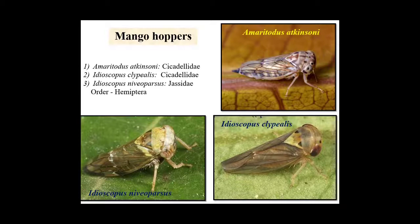The next major pest of mango is mango hoppers. There are three species: first is Amritodus atkinsoni belonging to family Cicadellidae; second is Idioscopus clypealis also belonging to family Cicadellidae; and third is Idioscopus niveosparsus belonging to family Cicadellidae. All three belong to order Hemiptera.